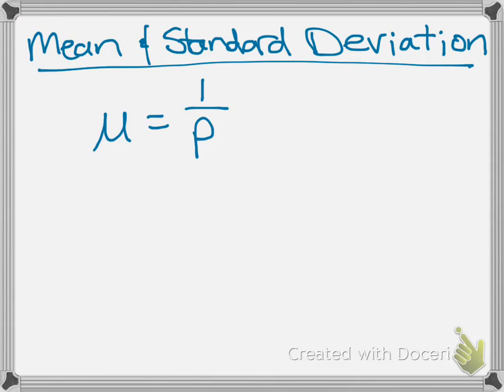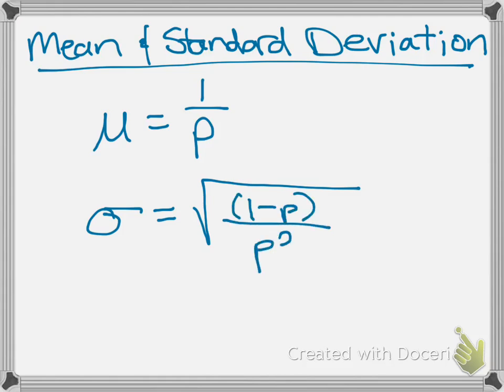For the standard deviation of a geometric random variable, we're going to use the symbol σ, that's going to be the square root of 1 minus p, where p is your probability of success, divided by p squared. So again not too bad.